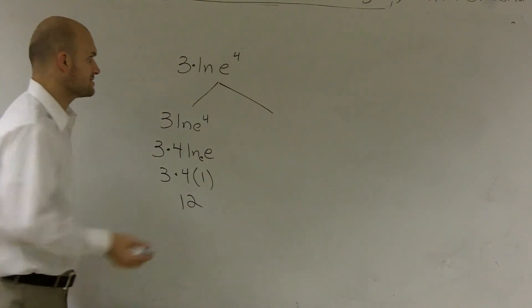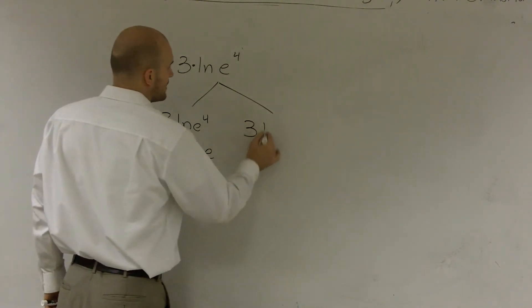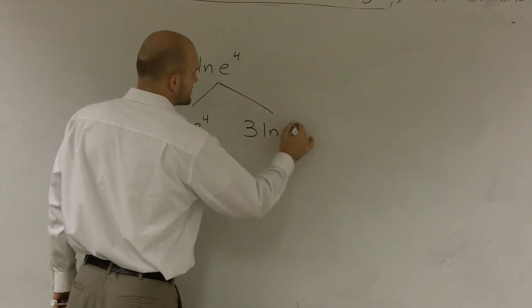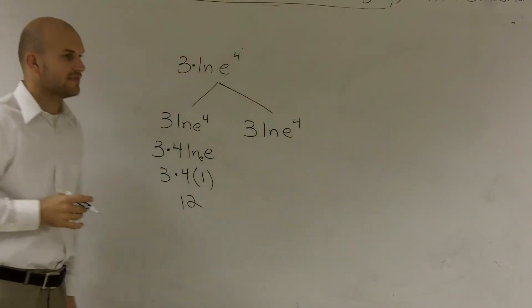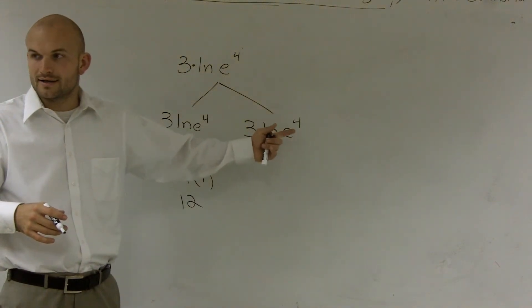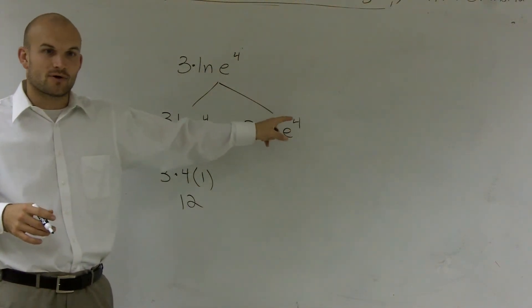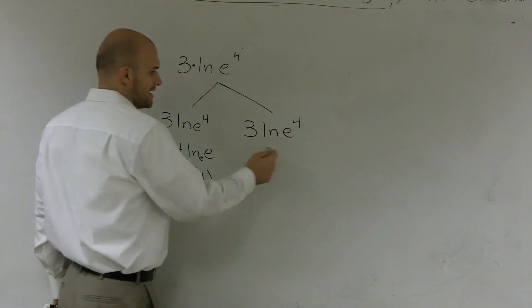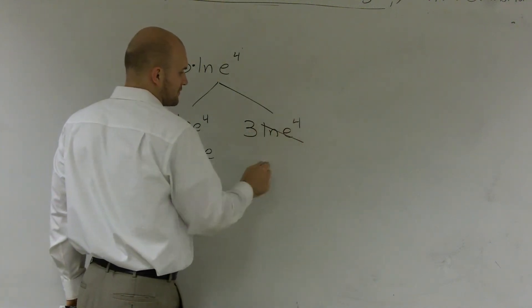The other way we could look at this is ln of e raised to the 4. One thing I know is that ln of e equals 1. When that's raised to the exponent inside the logarithm, this is just going to be left with 4.